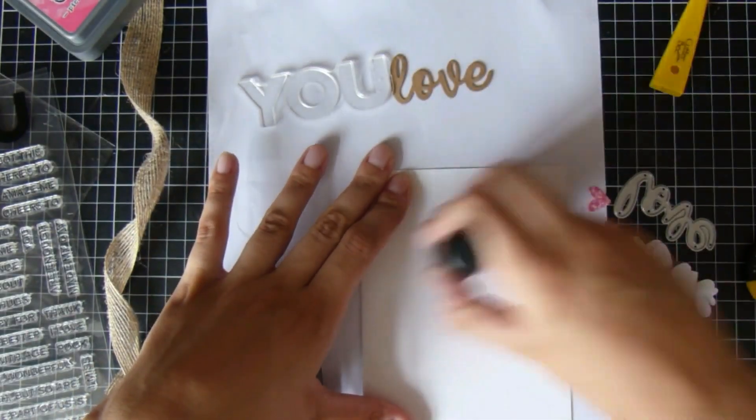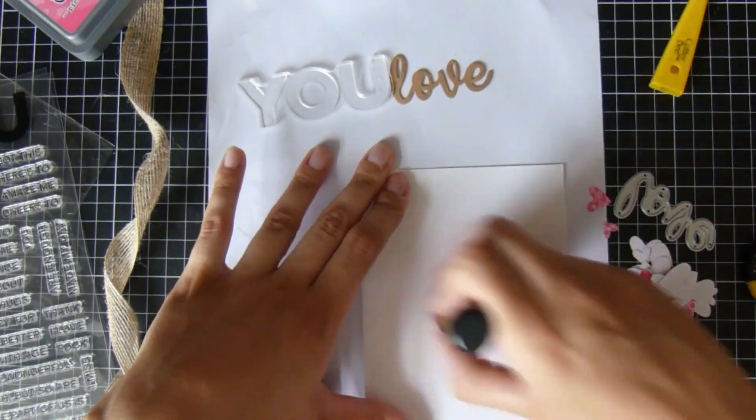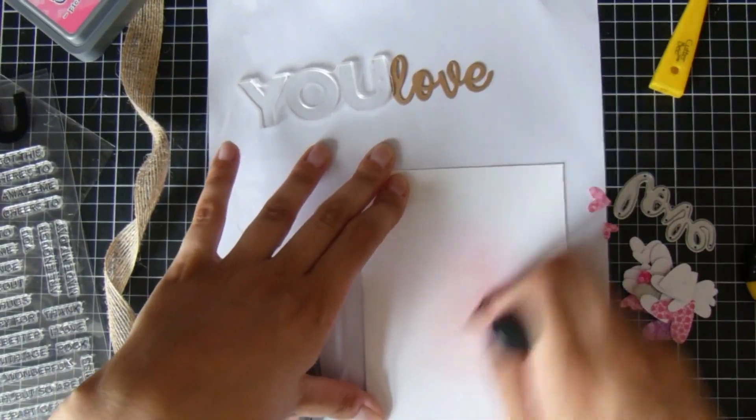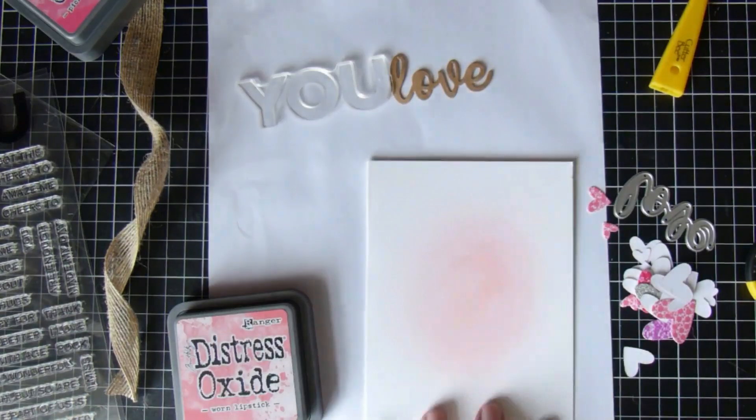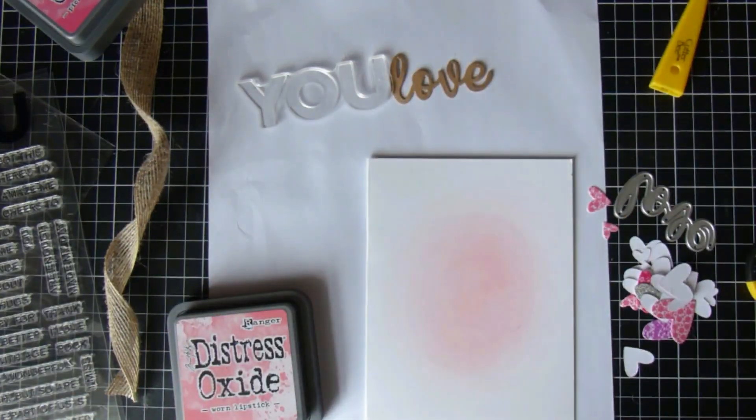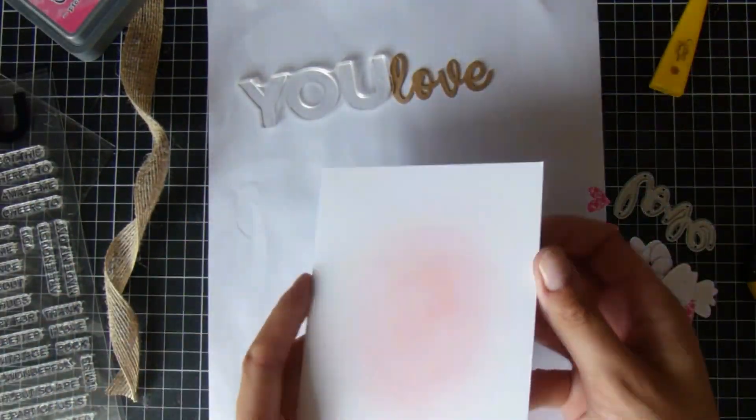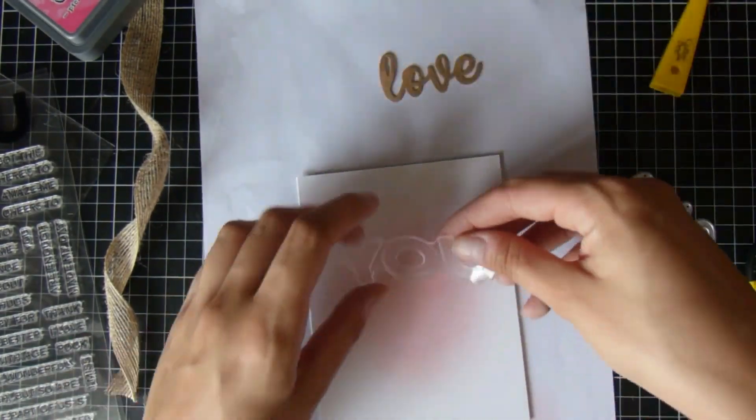I'm just using a little bit of ink that's actually left over, I think from maybe Worn Lipstick Distress Oxide. And I didn't even re-ink the ink blending tool—I just added what was kind of left, just because I wanted a really light little shading of pink in the background.